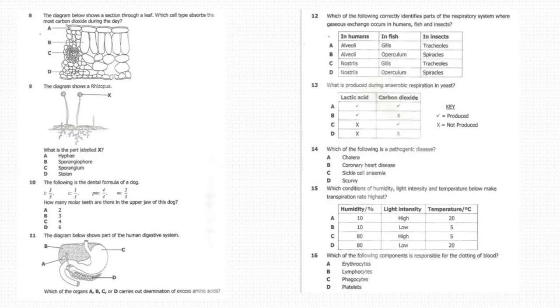Question number eight: The diagram below shows a section through a leaf. Which cell type absorbs the most carbon dioxide during the day? The answer is B. Nine: The diagram shows a Rhizopus. What is the part labeled X? X is the sporangium.